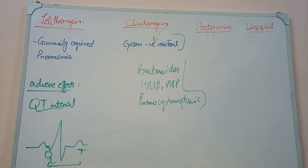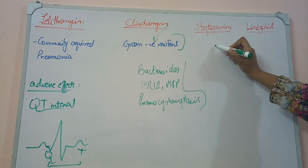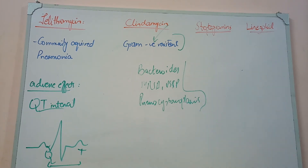Streptogramins — quinupristin and dalfopristin. These are best kept in mind for resistant strains. They are active against resistant strains like MRSA, PRSP, or any other resistant strains. Vancomycin-resistant strains are also covered well by these agents.